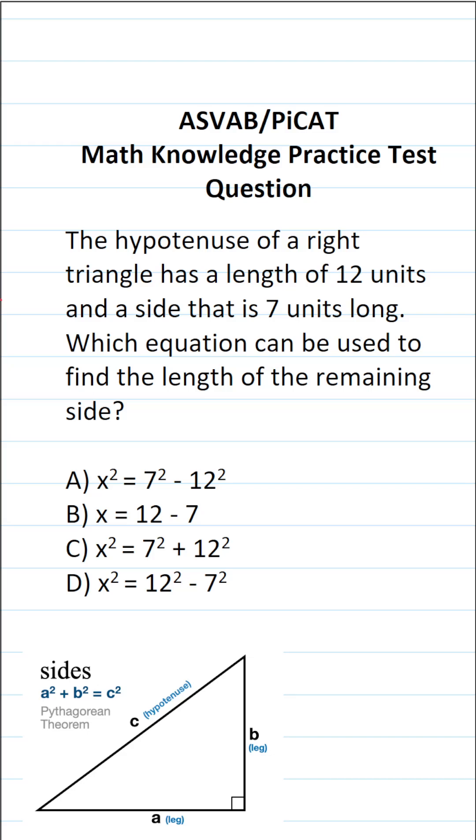For that reason, you do have to commit some of these basic formulas to memory at some point. The formula for the Pythagorean theorem is A squared plus B squared equals C squared, where A and B are the legs of a right triangle and C is the hypotenuse respectively.